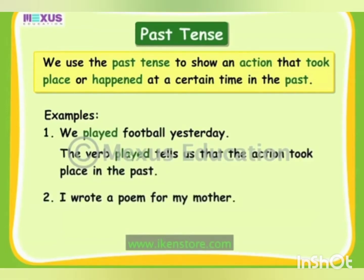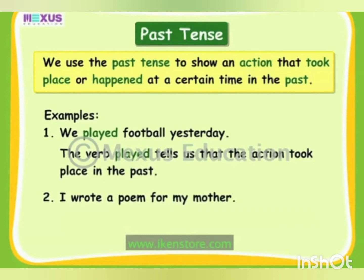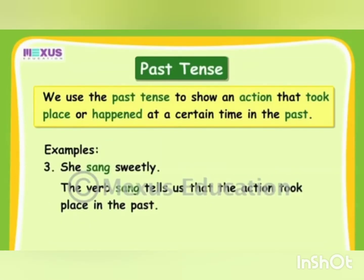The next example is, 'I wrote a poem for my mother.' In this sentence, the verb 'wrote' tells us that the action took place in the past. Another example: 'She sang sweetly.' The verb 'sang' tells us that the action took place in the past.